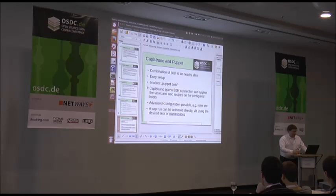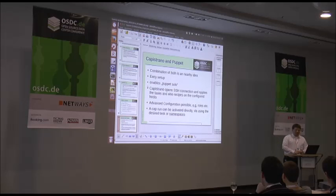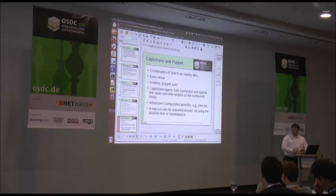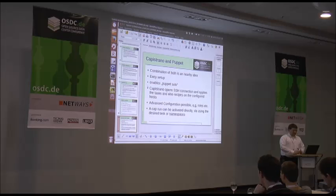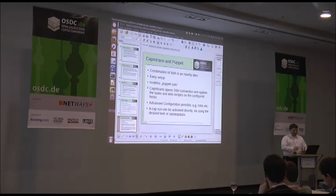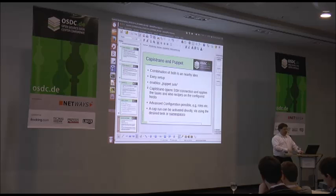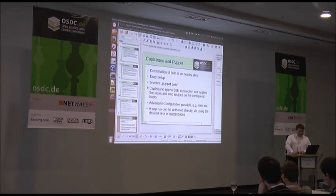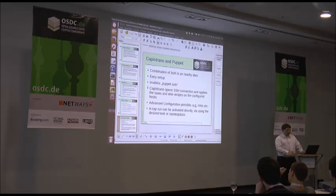A combination of both Capistrano and Puppet is a natural idea because both come from the Ruby environment, and someone who knows Ruby well can deal with this very easily. It can be easy to set up just by using the corresponding Ruby module, enabling a kind of Puppet solo approach, so you don't have to use the master environment — you just care about your Puppet manifests, copy them over, and run them. Capistrano opens an SSH connection, applies the tasks and recipes on the configured hosts, giving you a basic groundwork to set up your Puppet recipes.